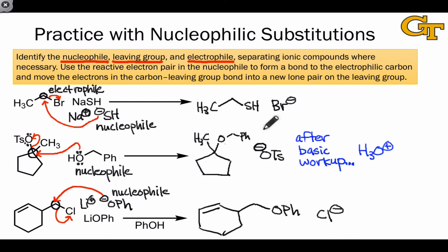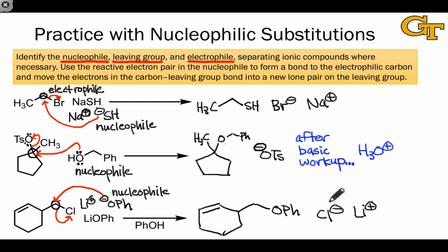One thing worth mentioning: the sodium cation in the first example and the lithium cation in the third example are spectator ions, and we might draw them on the product side just to show overall balance. To predict the product of a nucleophilic substitution reaction, all we have to do is follow the general curved arrow paradigm — donating a pair from the nucleophile and sending a pair to the leaving group.